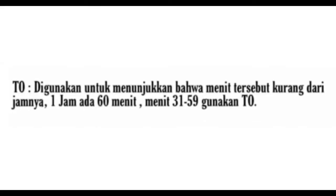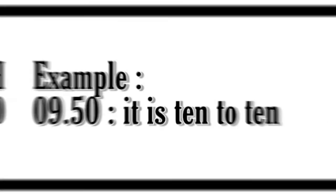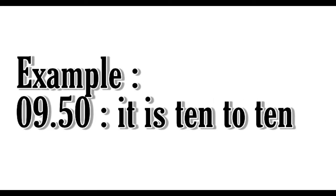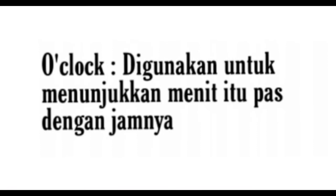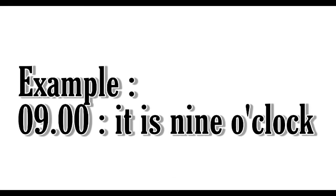To is used to indicate that the minutes are before the hour. In one hour there are 60 minutes. Minutes 31–59 use 'to.' Example: It is 10 to 10. O'clock is used to indicate the exact hour. Example: It is 9 o'clock.